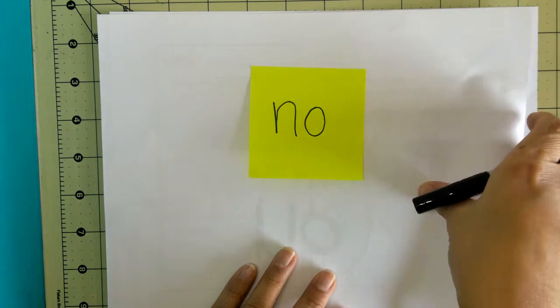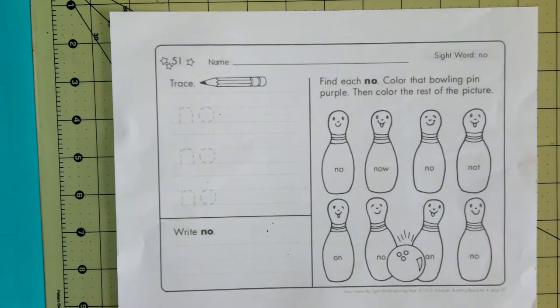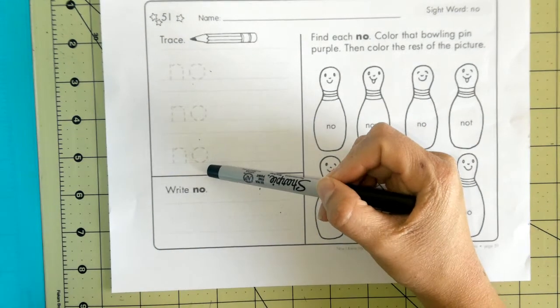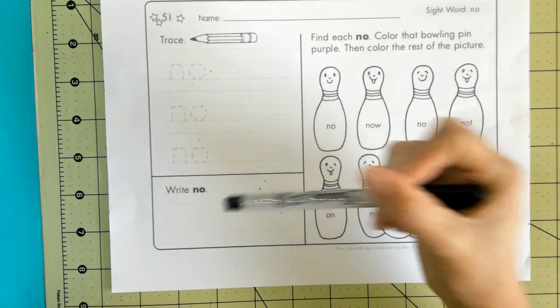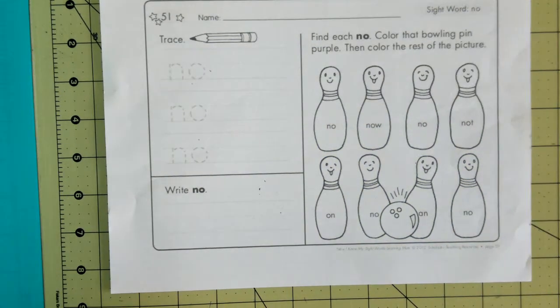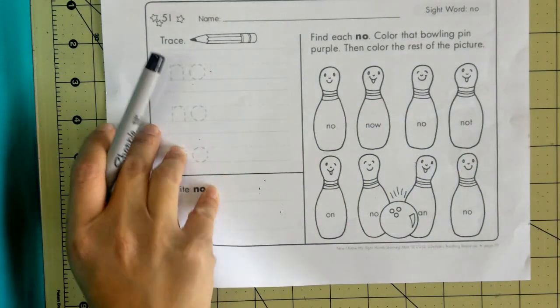Okay, if you have this sheet, you can complete this. You're going to trace your word no three times, write it one time nice and neat by yourself, and then here you're going to color the bowling pins that have the word no purple. When you're done, you will turn it to the back, and you're going to write a sentence using the word no.